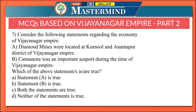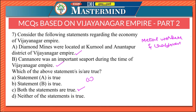The seventh question considers the economy of Vijayanagara Empire. Statement A says diamond mines were located at Karnul and Anantapur districts; Statement B says Karnanur was an important seaport during the Vijayanagara period. Both statements are true — Option C. Metal workers and craftsmen flourished during this period. Diamond mines were indeed located in Karnul and Anantapur. Karnanur was the chief seaport among the many on the Malabar coast.